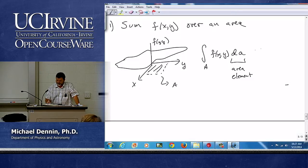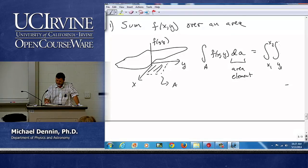Now, in the simple Cartesian case I drew of a rectangle, this becomes x1 to x2, y1 to y2, f of xy, dx, dy.